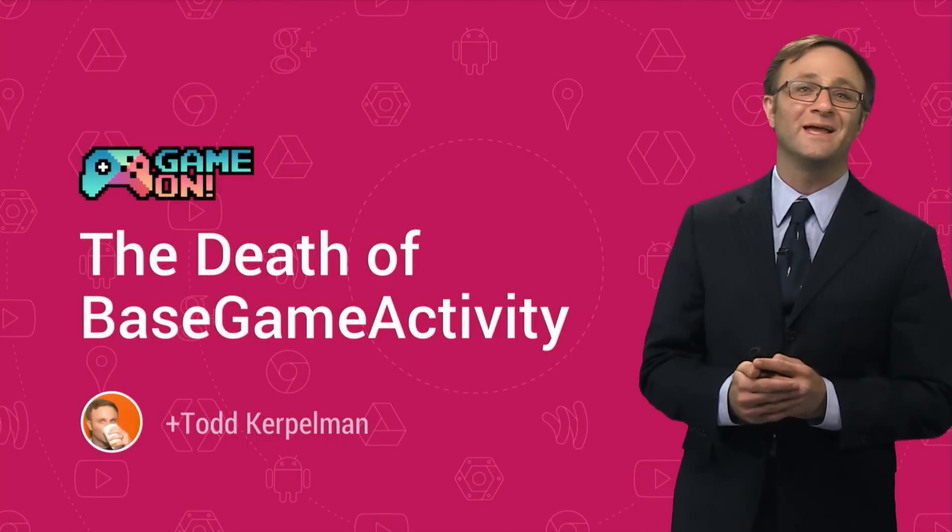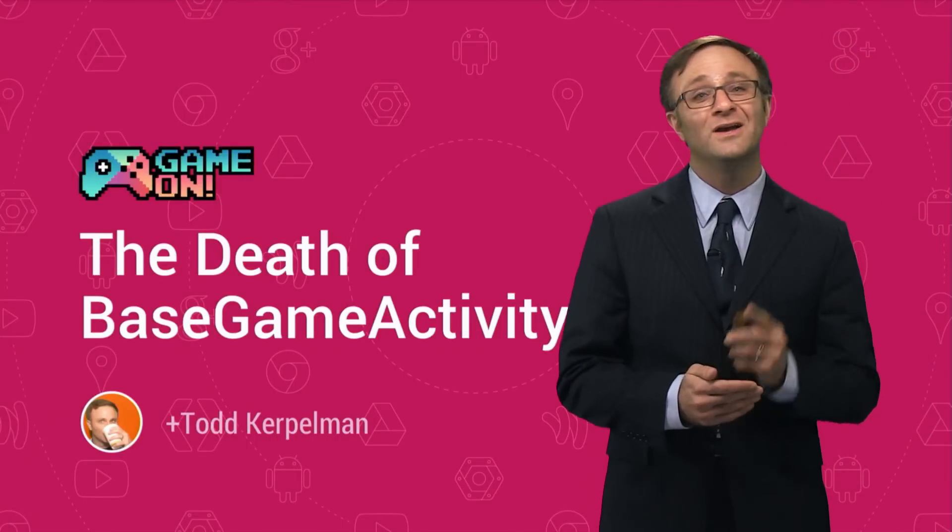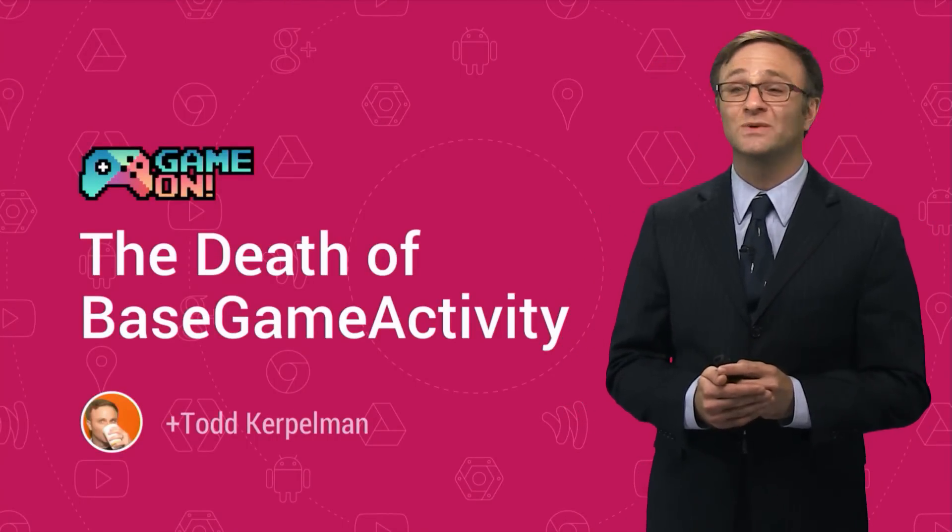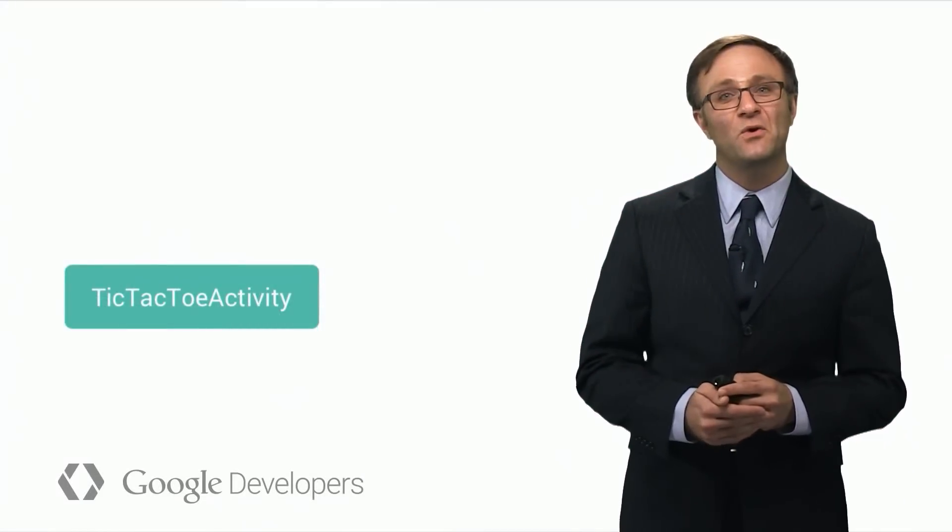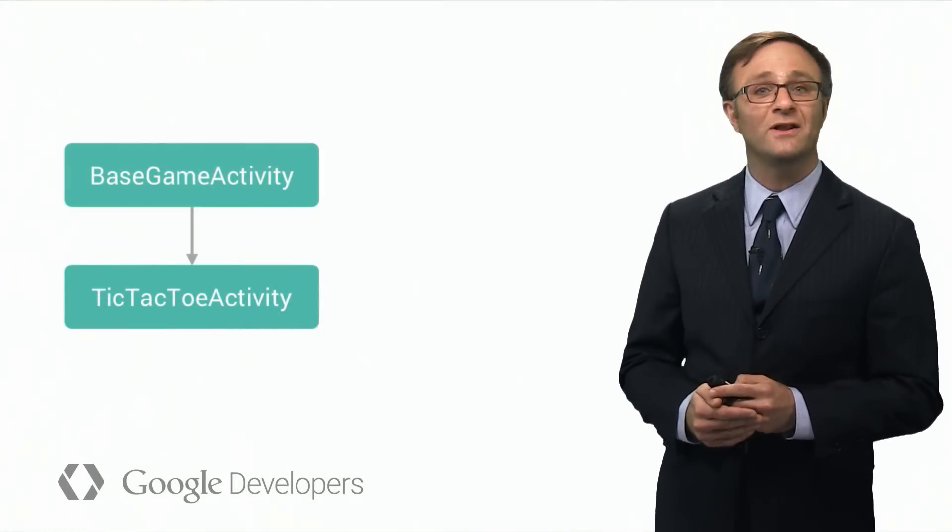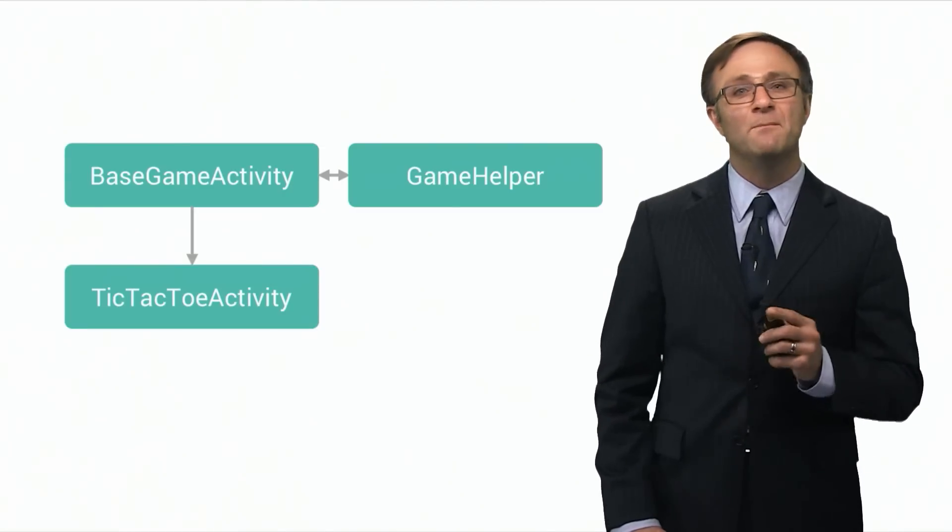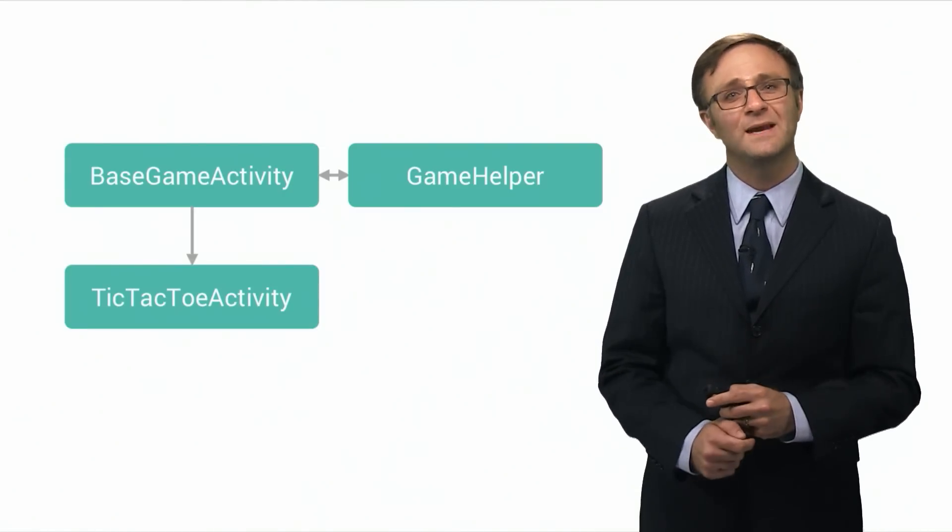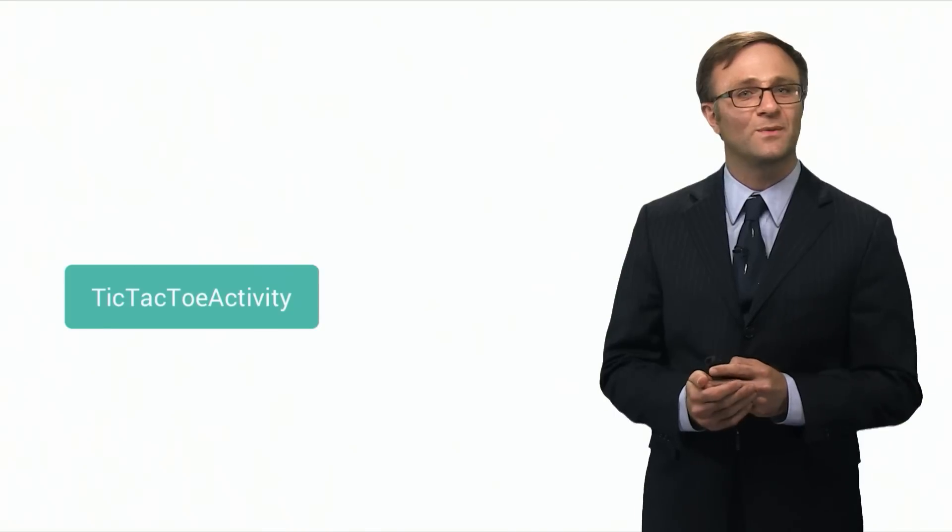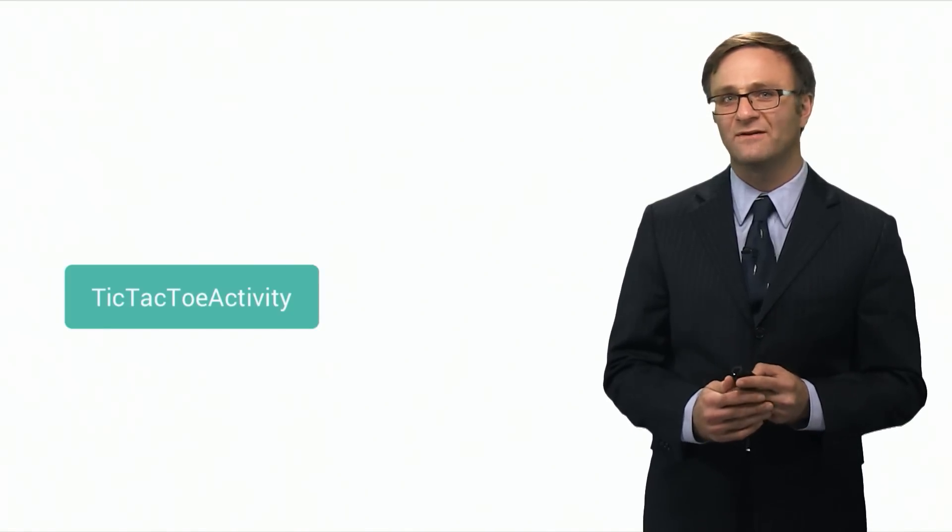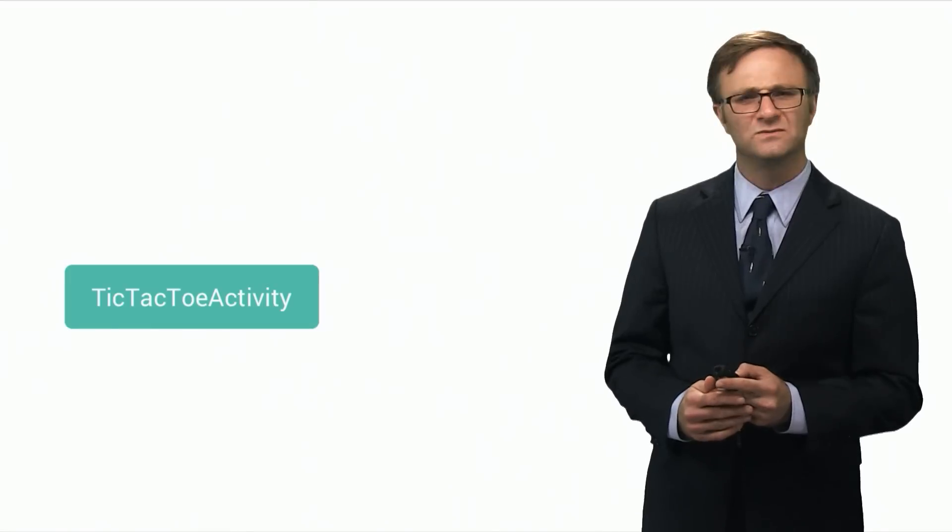Yes, if you've been following Google Play Game Services on Android for a while, you may have noticed that our sample code has recently changed. Whereas before all of our sample applications inherited from Base Game Activity, a class that used Game Helper to do a lot of heavy lifting, both of these classes have disappeared from our sample apps and have also vanished from our documentation, almost as if they never existed in the first place. So what happened?